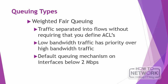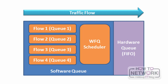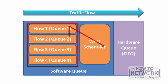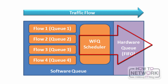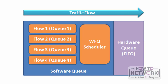Weighted fair queuing is not the best option in every scenario because it doesn't provide enough control in the configuration, but it is far better than first in first out because interactive traffic flows that generally use small packets do get the priority they need in the software queue. As shown in the diagram, different WFQ traffic flows are placed into different queues before entering the WFQ scheduler, which allows them to pass to the hardware queue. If one queue fills, packets are dropped — lower priority packets first — as opposed to the tail-dropping approach of FIFO.